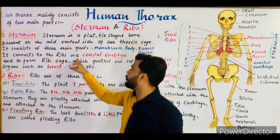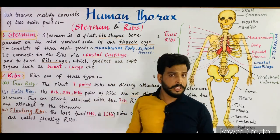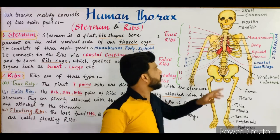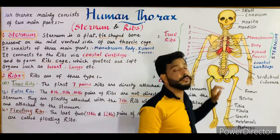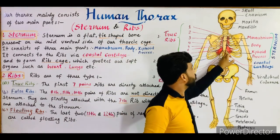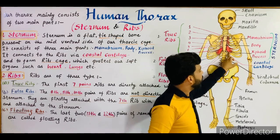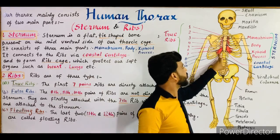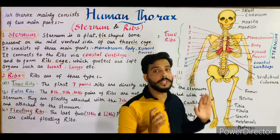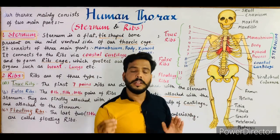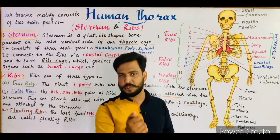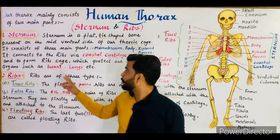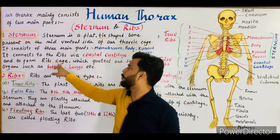The sternum connects to the ribs by costal cartilage. The ribs are not directly connected to the sternum; they connect with the help of cartilage. As shown in red color in this diagram, this cartilage is known as the costal cartilage. With this costal cartilage the ribs are attached to the sternum.